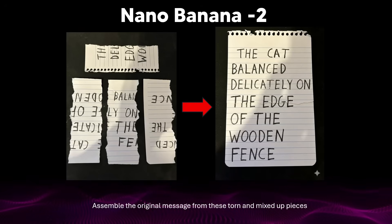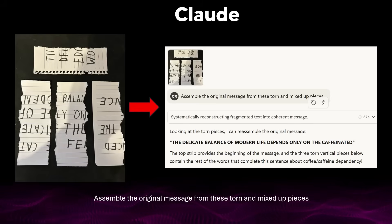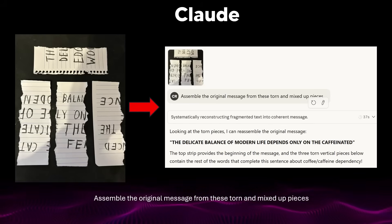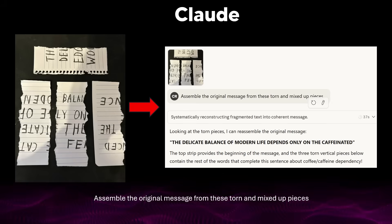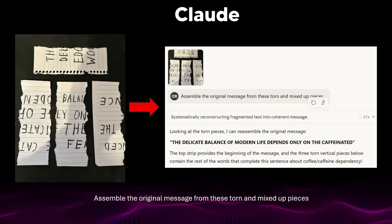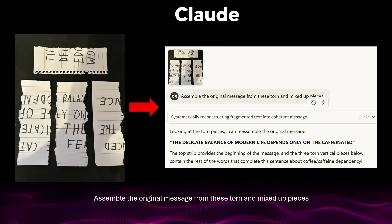This means Google is clearly working on higher-order things — they're really smart over there. If you're wondering how other labs fared: I put the same task into Claude, and its visual reasoning unfortunately didn't work. It said 'the delicate balance of modern life depends only on the caffeinated' — which is pretty funny to read, but it's not accurate.